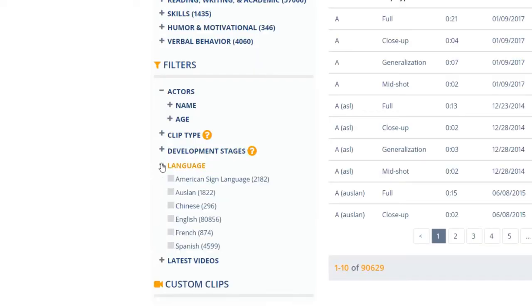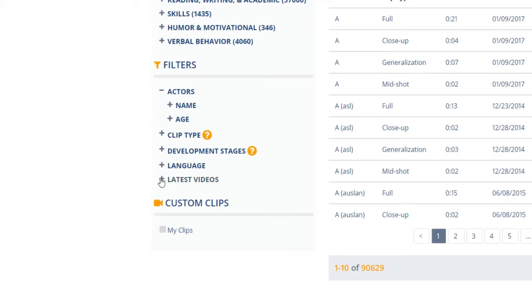The Language filter will sort our library by ASL, Auslan, Chinese, English, French, or Spanish. The last filter, Latest Videos, will show only the latest videos uploaded by Gemini.